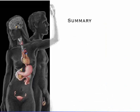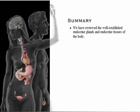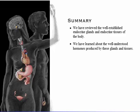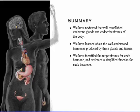Here's a summary of what we've covered. We have reviewed the well-established endocrine glands and endocrine tissues of the body, and learned about the well-understood hormones produced by these glands and tissues. We have identified the target tissues for each hormone and reviewed a simplified function for each hormone.